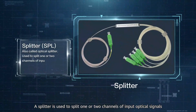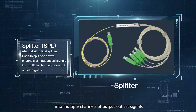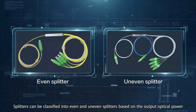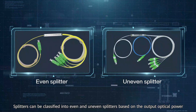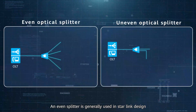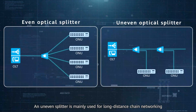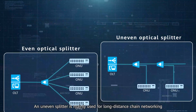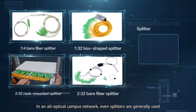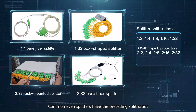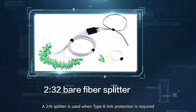A splitter is used to split one or two channels of input optical signals into multiple channels of output optical signals. Splitters can be classified into even and uneven splitters based on the output optical power. An even splitter is generally used in star network design, while an uneven splitter is mainly used for long-distance chain networking. In an all-optical campus network, even splitters are generally used.